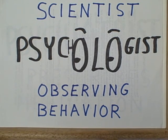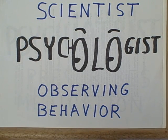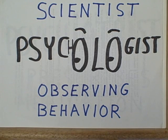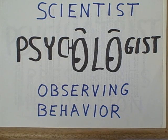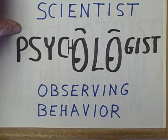If this is an experimental psychologist, he might be observing a rat in a cage. If this is an industrial psychologist, she might be observing a worker on the assembly line. If this is a clinical psychologist, she might be observing a patient in a clinic. Psychologists are scientists who observe behavior.